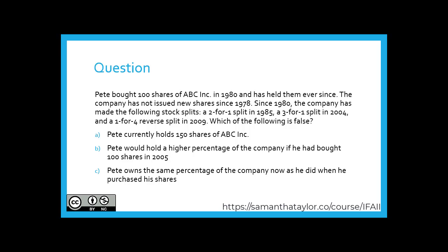A: Pete currently holds 150 shares of ABC Inc. B: Pete would hold a higher percentage of the company if he had bought 100 shares in 2005. C: Pete owns the same percentage of the company now as he did when he purchased the shares. Which one is false?